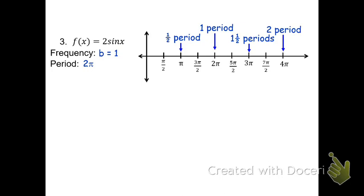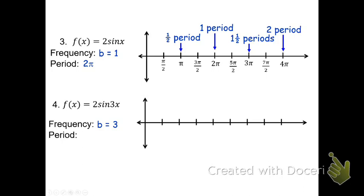Now let's look at an example in radians where the frequency is not 1. Let's go to where the frequency was 3 again. Here, the period is going to be 2pi over 3. We'll label the fourth mark the 2pi over 3. Now with the fractions, if you want to find half of that fraction, you can either take half of the numerator, or, if that doesn't work, double the denominator. We have 2pi over 3. We can take half of that top number — half of 2 would be 1 — so half of 2pi over 3 would be 1pi over 3.